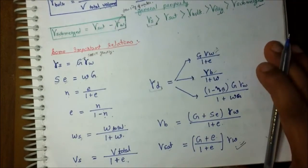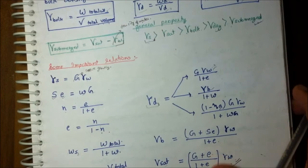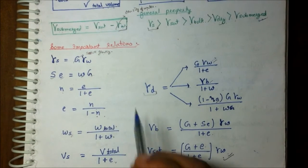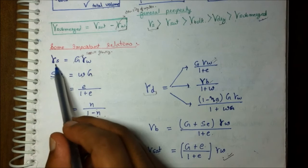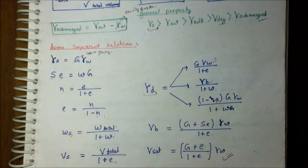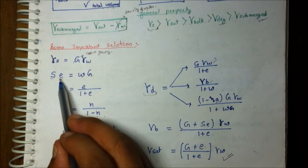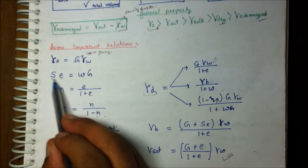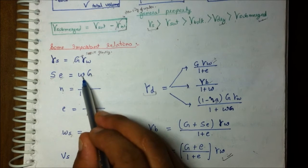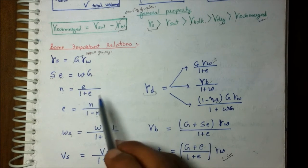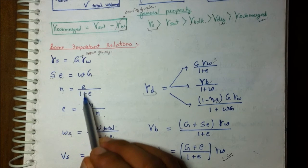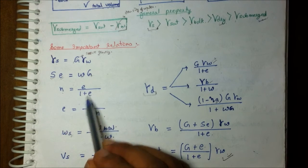Now we have some important relationships. Gamma S equals G times gamma W, where G is the specific gravity of soil. SE equals WG, where S is degree of saturation, E is void ratio, W is water content, and G is specific gravity. Porosity N equals E upon (1 plus E).